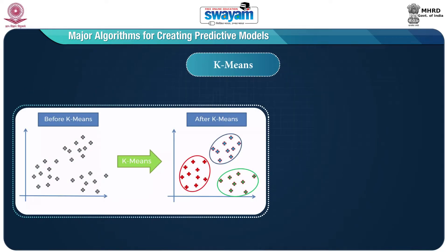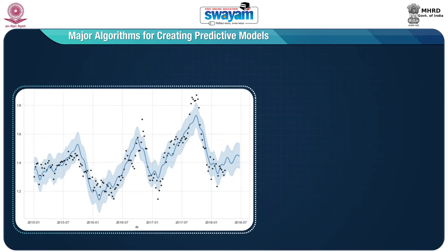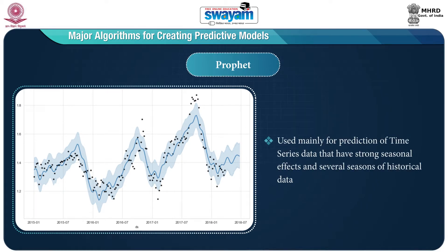Next is the K-means algorithm — this algorithm finds K clusters in a set of data, where a cluster is a group of data points with similar features that are grouped together. The centroids of K clusters are used to label the new data.